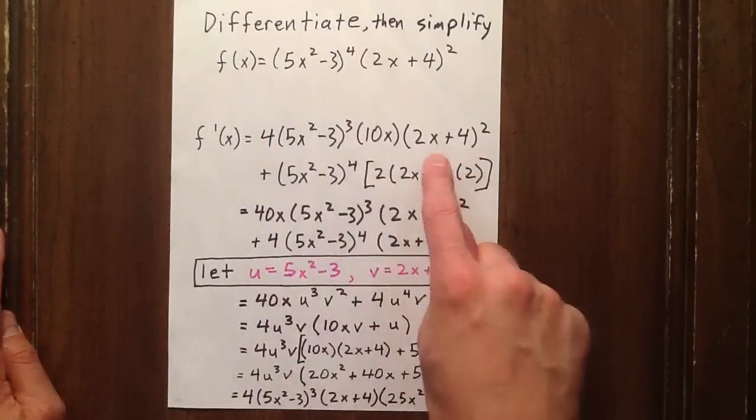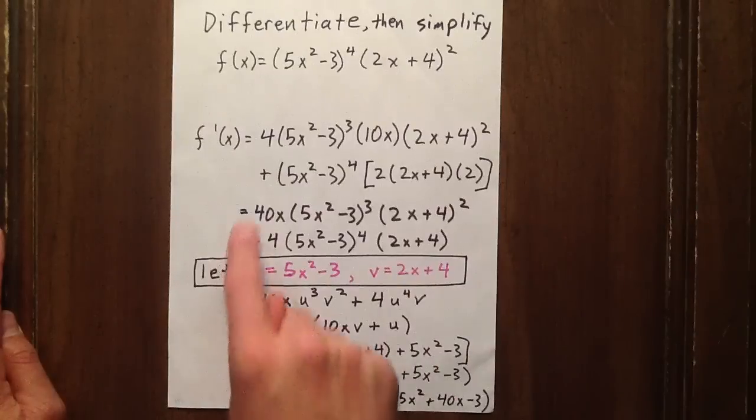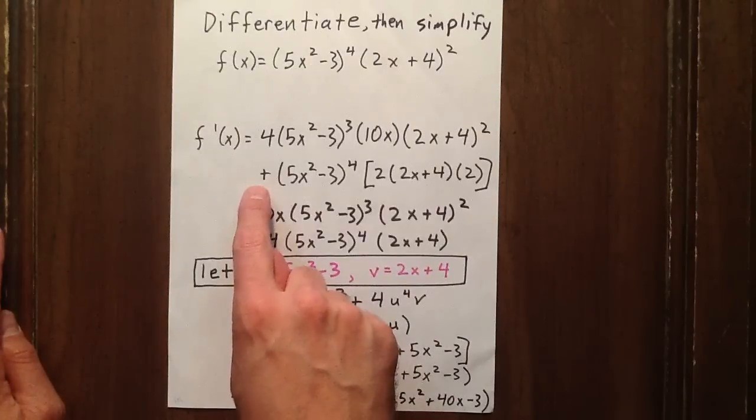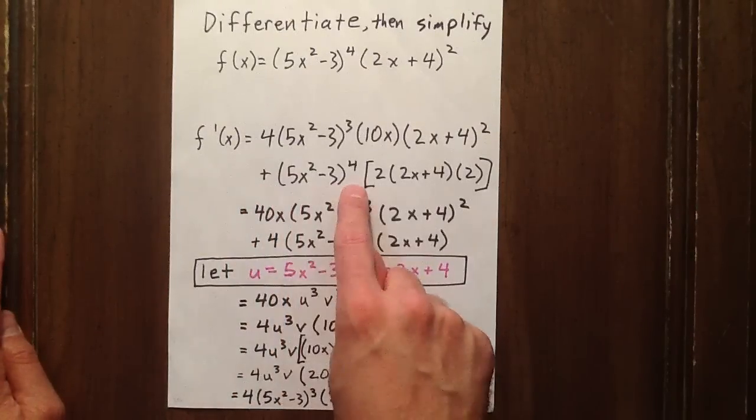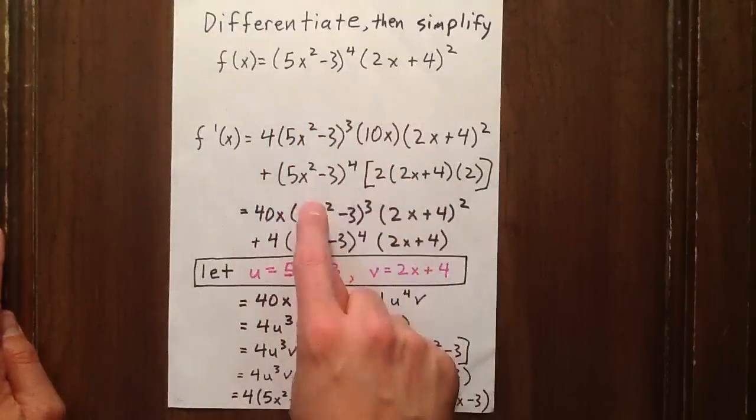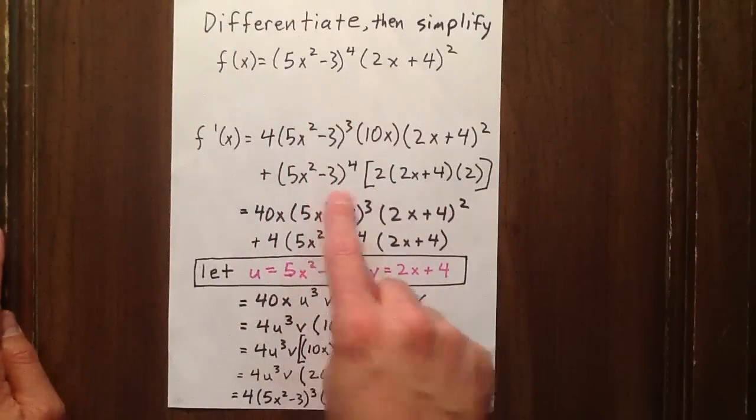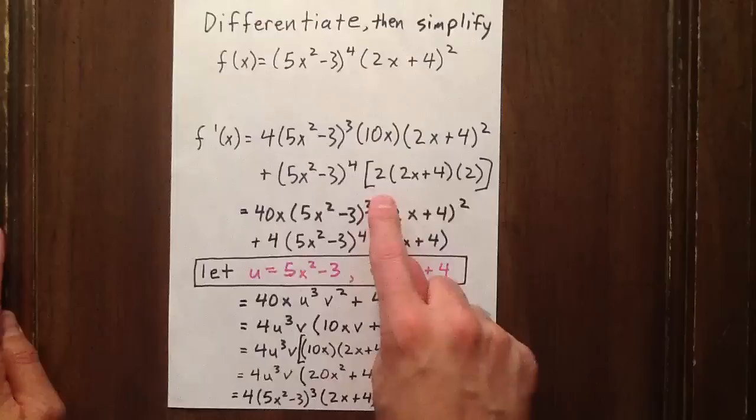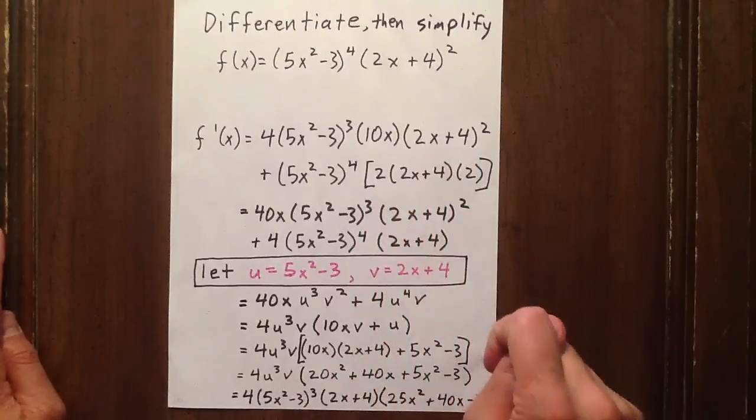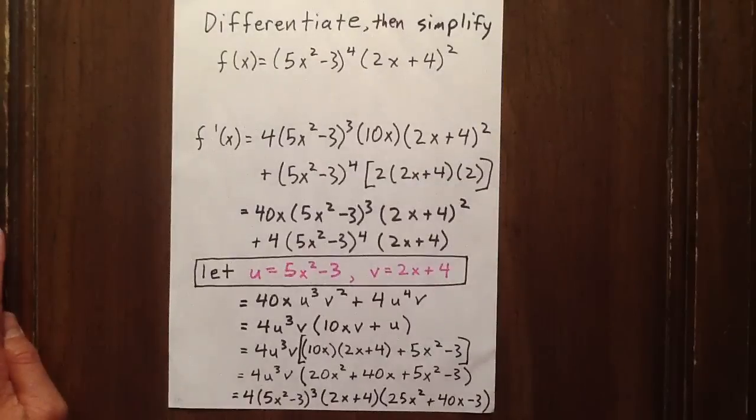Then we'll multiply by the second factor. The product rule tells us to add the first factor, which is 5x squared minus 3 to the exponent 4, times the derivative of the second. So that's 2 times 2x plus 4 to the exponent 1 times the derivative of what's inside.